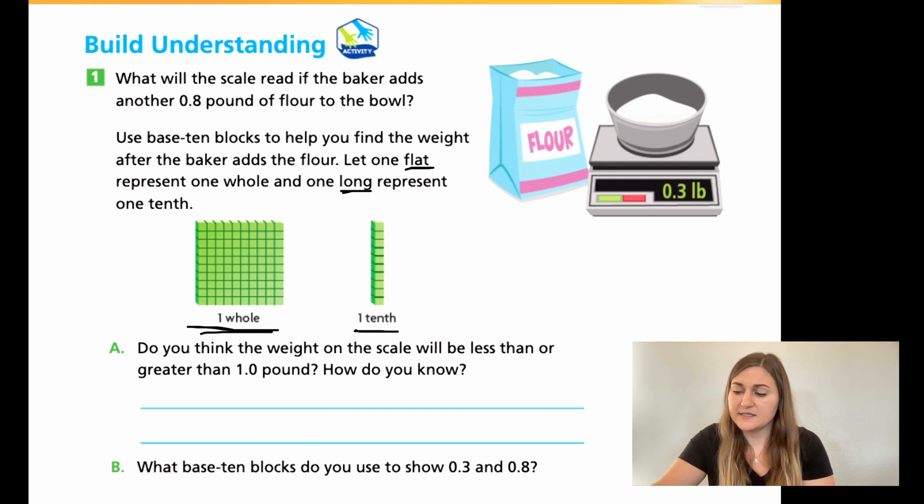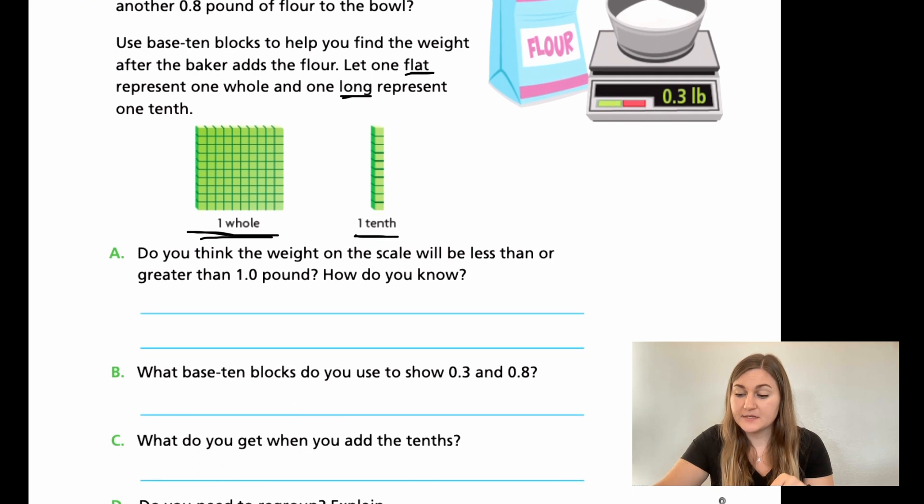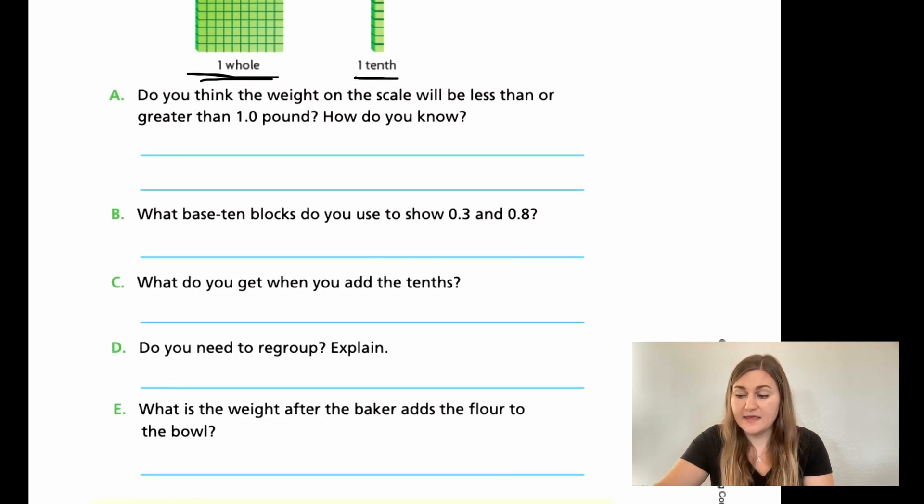So flat and then long. Okay. So for A, do you think the weight on the scale will be less or more than one pound? So if I added 0.8 to my 0.3, do you think it's going to go over a pound or do you think it'll stay under a pound? And how do you know? For B, what base 10 blocks do you use to show 0.3 and 0.8? So if you had to represent 0.3 using either a flat or a long, what would you use and how many for each number?